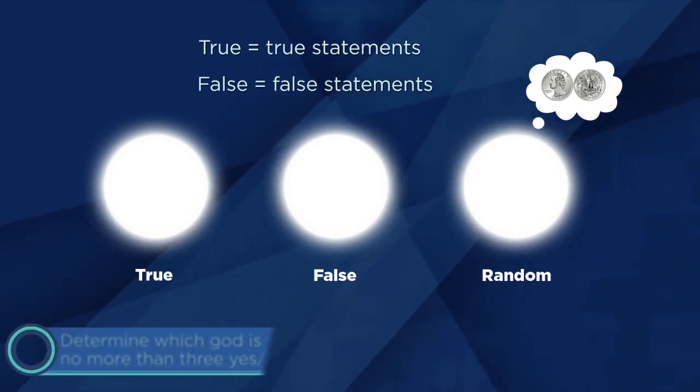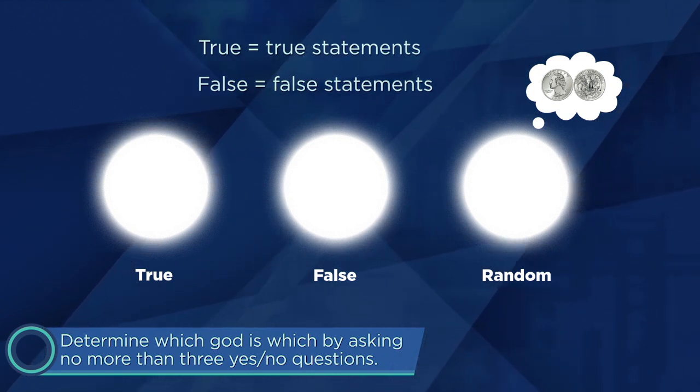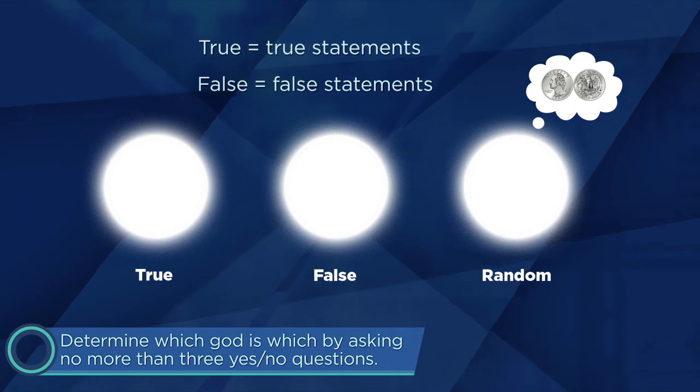Your task is to determine which god is which by asking no more than three yes-no questions. However, there's another complication. Though the gods understand English perfectly, they will answer in their own language. In this language, the words for yes and no are da and ja, but you don't know which word means yes and which word means no. So you have three yes-no questions, but you don't know who you're speaking to, and you won't know what his answer means. What can you do?